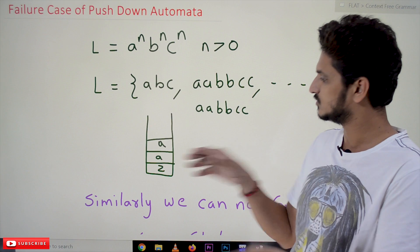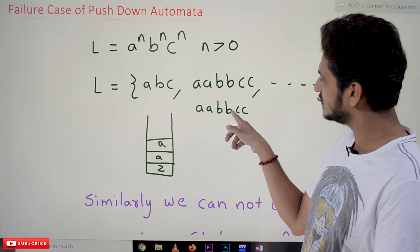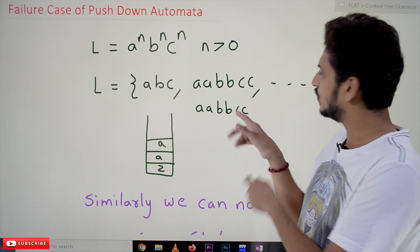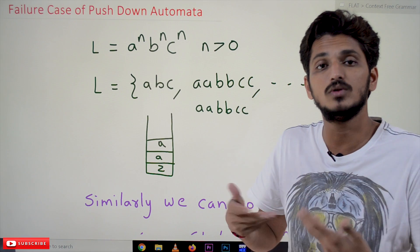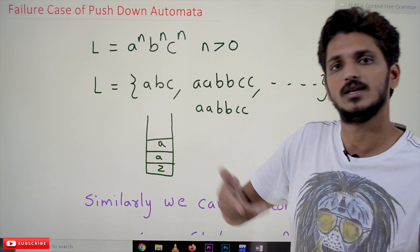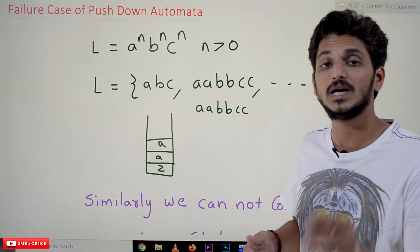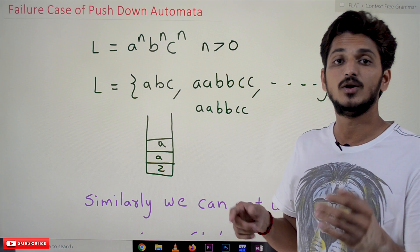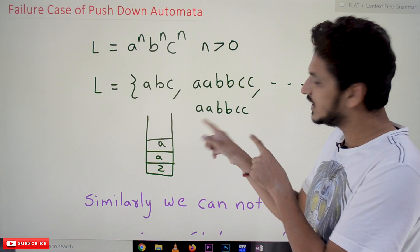So we pop one a from the stack. Whenever you see b, the second b, we pop another a from the stack. So what happens to the c? How do we count the equality of c? It is not possible because we had only stack memory.